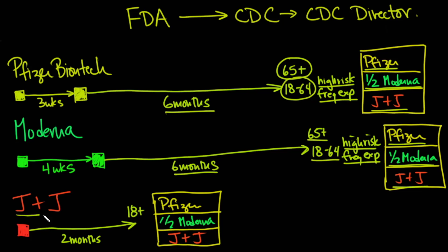If you had Johnson & Johnson and it's been more than two months, you just have to be 18 years of age or older, and you can get the Pfizer, the half-dose Moderna, or the Johnson & Johnson vaccine as your booster.